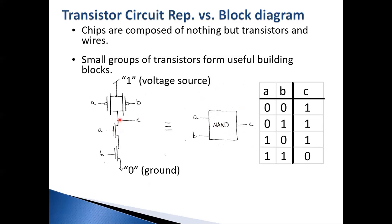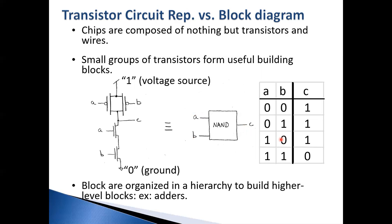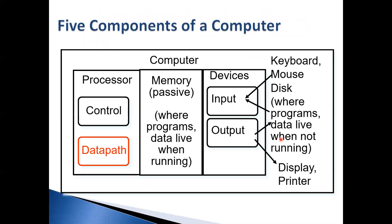We're not going to learn the actual transistor design — that takes one to two semesters. All I expect you to be able to do is: if input A is 1 and input B is 0, what will C be for a NAND? The answer is 1. Make sure to work on the exercises in the textbook. Now, if you open your computer — don't do this until after the final, since you still need it for exams — you see several components. We call these the five major components of a computer.